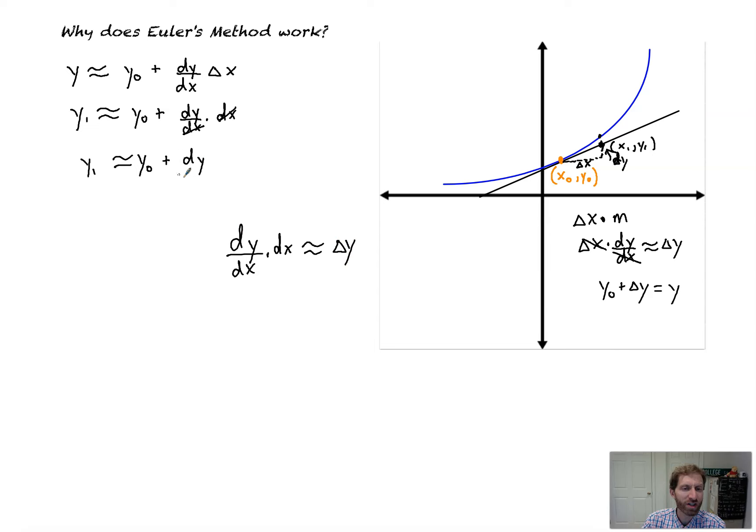And so if I add the change in y onto the original value, I'll get the exact value. But we don't have the exact change in y. We just have an approximation. So how does that tie into point slope form? Let me show you this. This is mind-blowing.